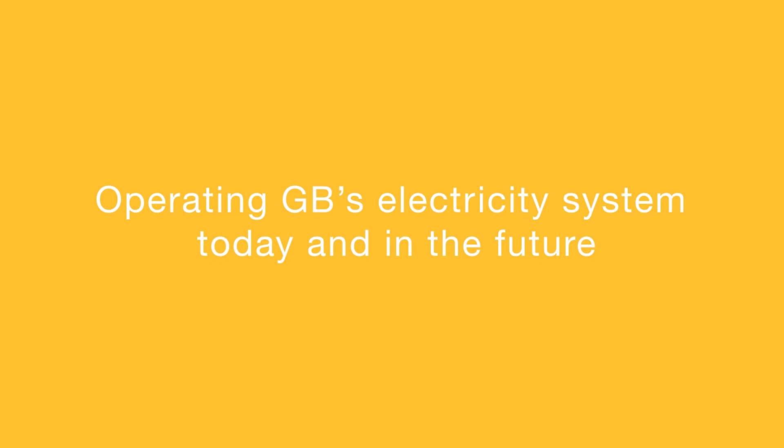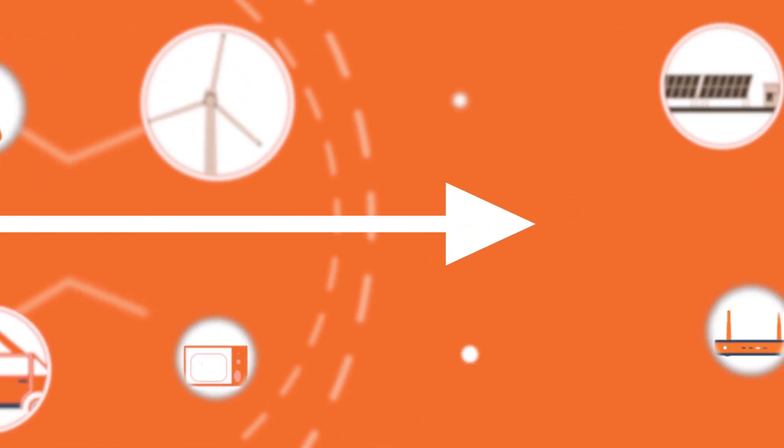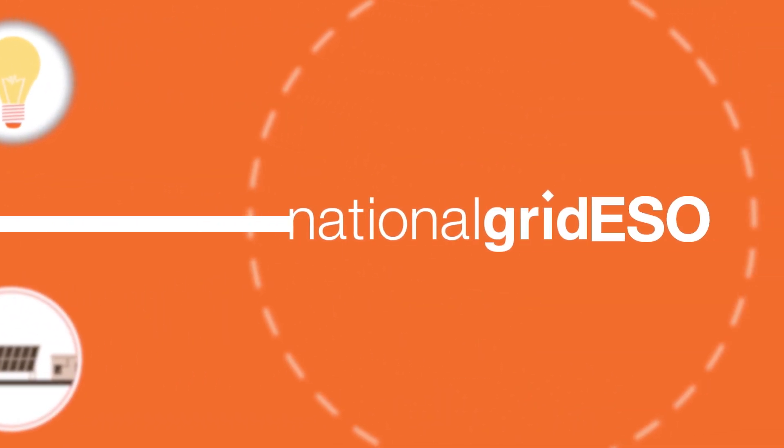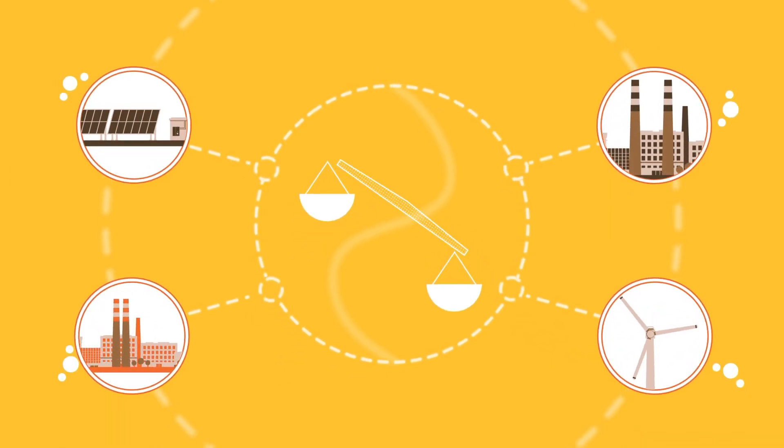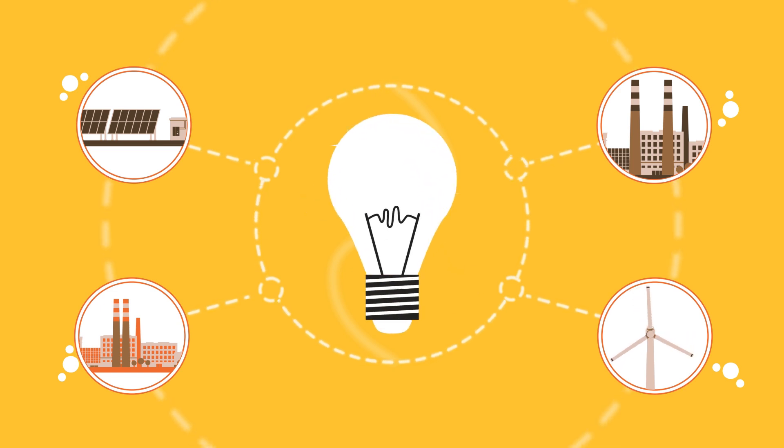Operating GB's electricity system today and in the future. National Grid Electricity System Operator sits at the heart of Great Britain's electricity industry. We manage the system second by second, so demand and supply are always in balance. That's how we keep the lights on.